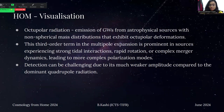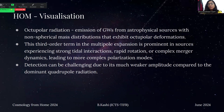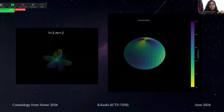For higher-order mode visualization, we focus on octopolar radiation. Octopolar radiation is the immediate term after quadrupolar radiation — that is, the third-order term in the multipolar expansion. This radiation is significant in strong tidal interactions, rapid rotation, or complex merger dynamics. However, it is very challenging to detect because of the weaker amplitudes, as the quadrupole mode is very dominant when compared to these modes. This is the visualization of the octopolar mode on a unit sphere, and on the left it changes over time.